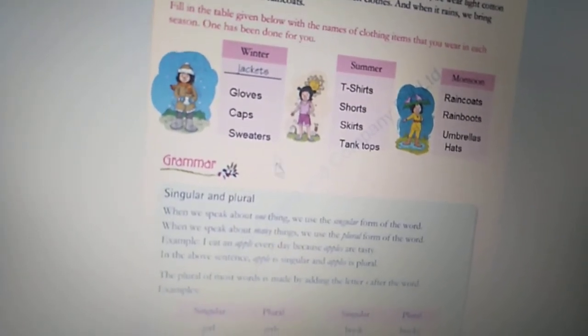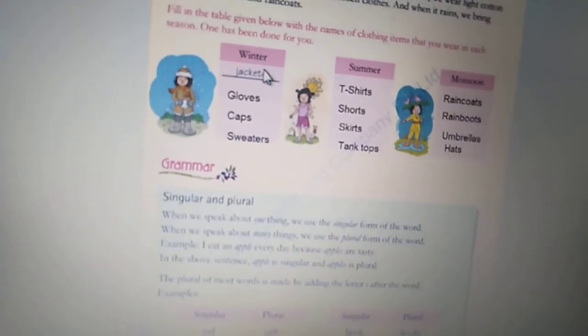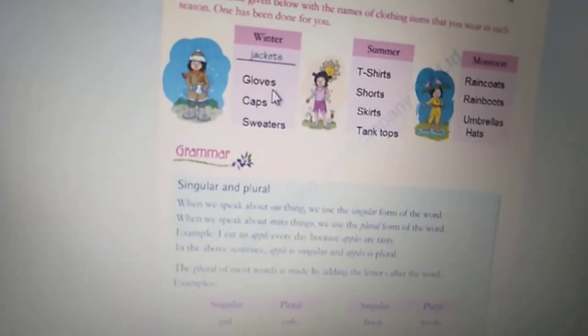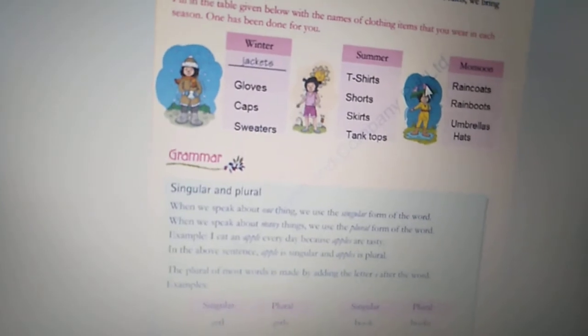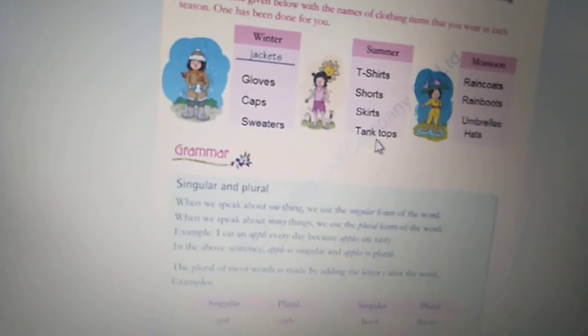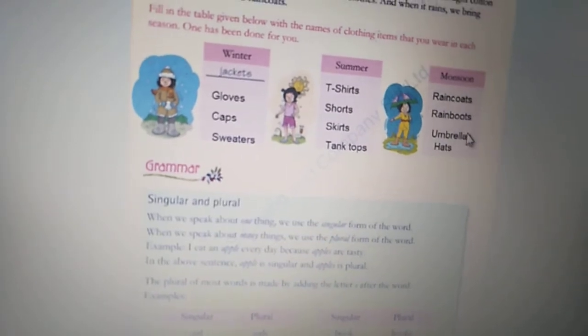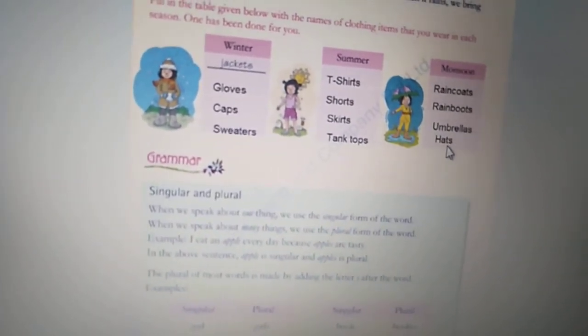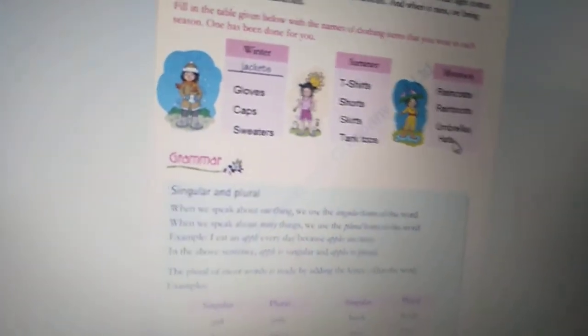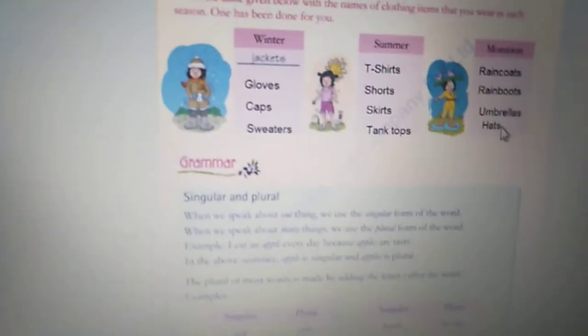In summer season we wear t-shirts, shorts, skirts, and tank tops. In monsoons we wear raincoats, rain boots. We take out umbrellas, hats. We take out umbrellas and hats to cover our heads so that humare jo baal hai woh barish ke paani se gilena ho jaye.